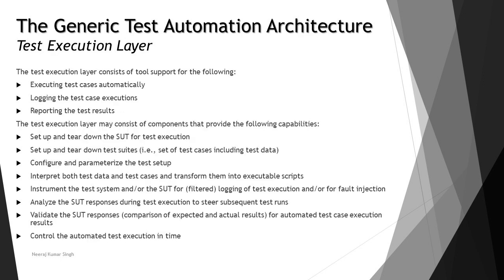Next is the test execution layer. It consists of tool support for the following activities: executing the test cases automatically, logging the test case executions including timestamps and other information, and reporting the test results. There will be an additional component with respect to automation which reflects the automation outputs during execution. We'll now look at those execution-related capabilities of the automation testing tool and how they add value and efficiency to automation.